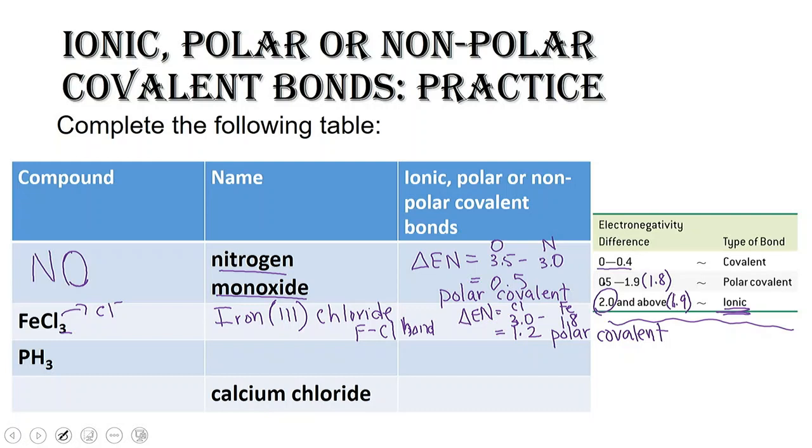Okay. Let's look at the last two problems. Next, we have PH3. Well, in order to name this, we've got to find where P and H are on the periodic table. P is a nonmetal, and hydrogen is also a nonmetal. So we have to name this as a covalent naming system. And I've got one phosphorus and three hydrogens. So that's phosphorus trihydride.